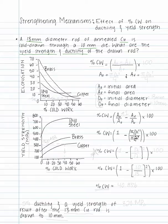First let's identify the equation for percent cold work. Percent cold work equals A₀ minus A_f divided by A₀ multiplied by 100 to get a percent.